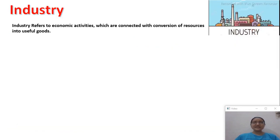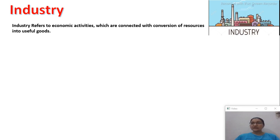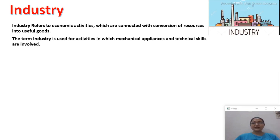Industry refers to economic activities which are connected with the conversion of resources into useful goods. The term industry is used for activities in which mechanical appliances and technical skills are involved. It refers to an activity which converts raw materials into useful products. For example, if you have raw materials like plastic, industry converts them into boxes or packaging materials — something useful.